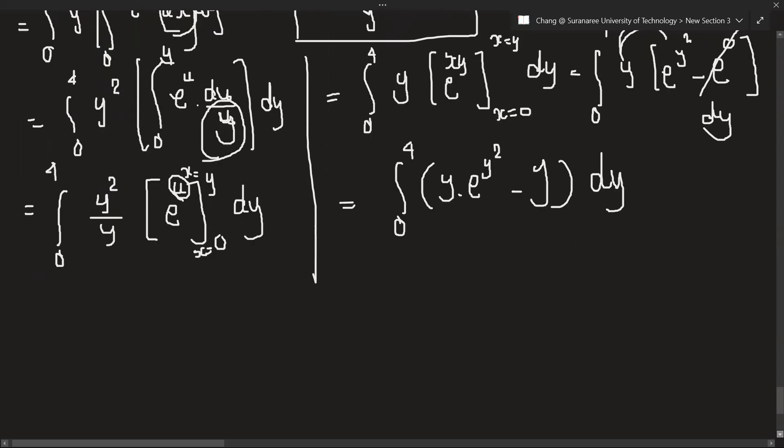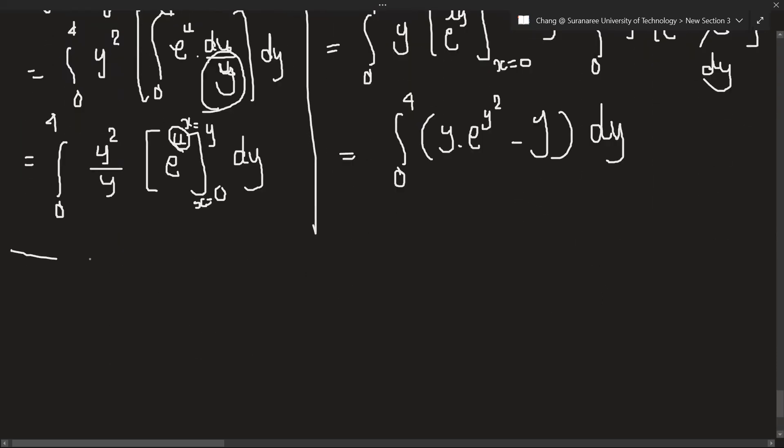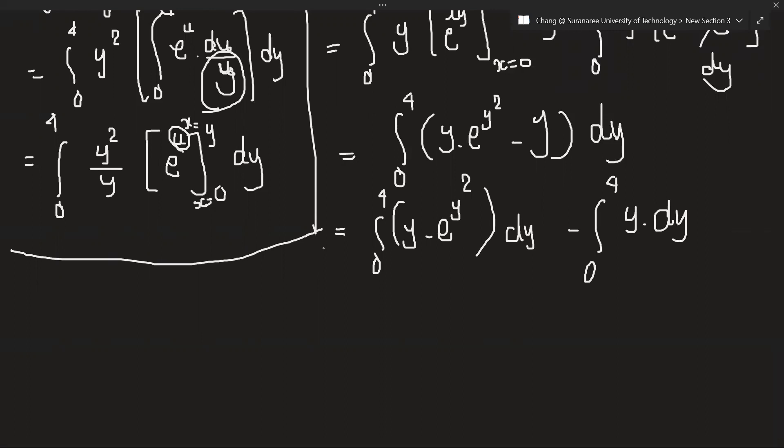So let's solve this one. We can write this as 0 to 4: e^(y²) dy minus 0 to 4 y dy. So this is according to the property of integration. We can just write it separately like that. And for this one, I will use change of variable again.